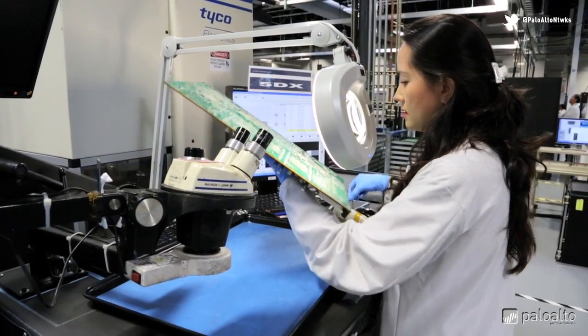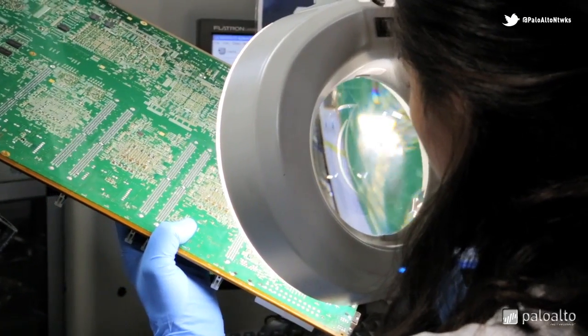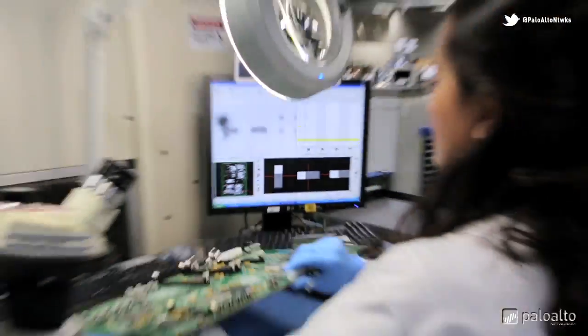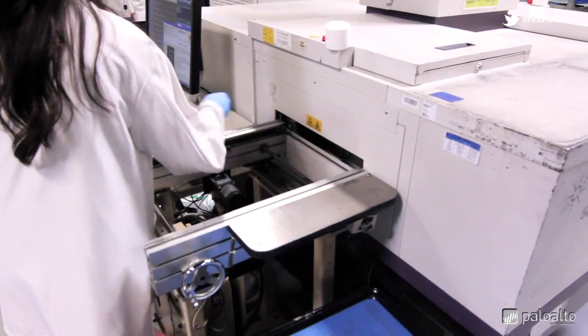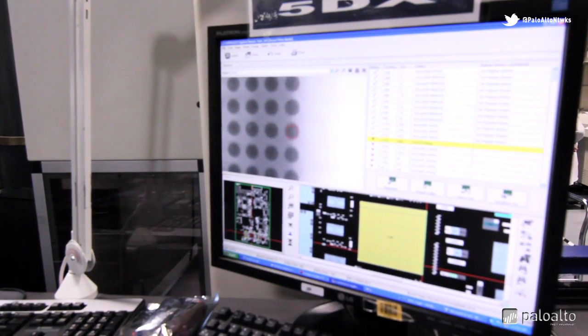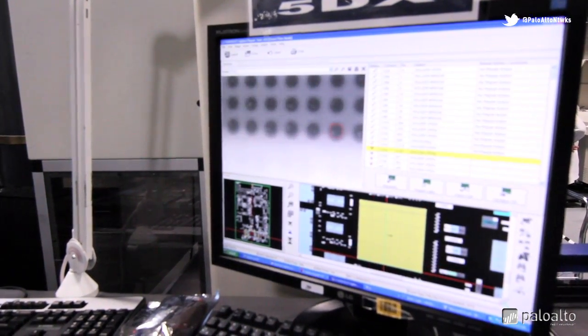Now the board goes through another quality control inspection, making sure everything has been assembled perfectly. The 5DX machine inspects the boards further, using x-rays to verify that each solder joint is to spec.